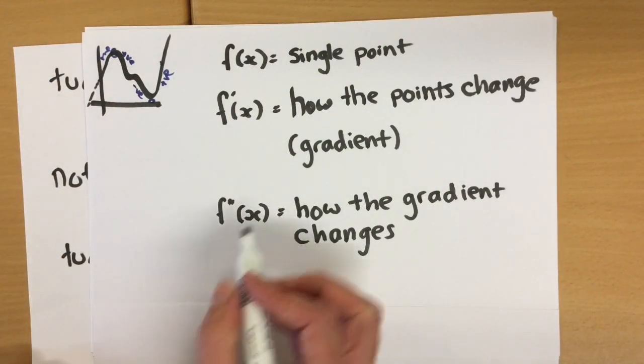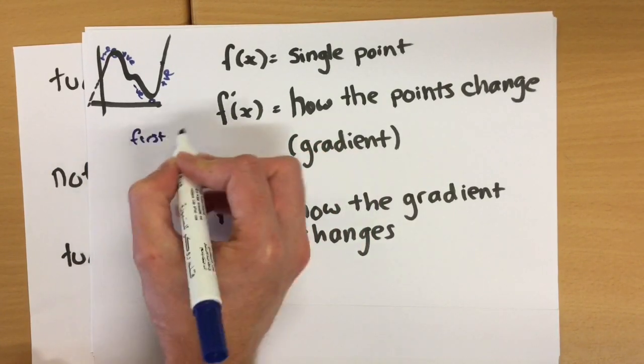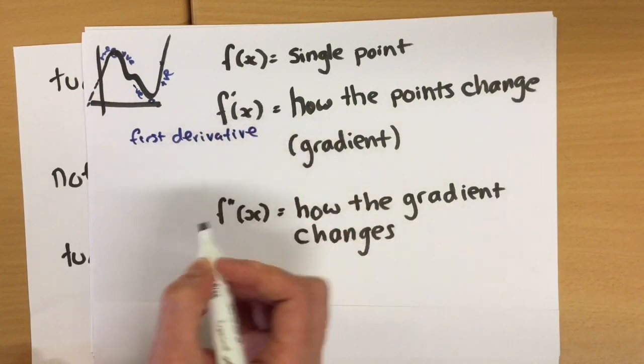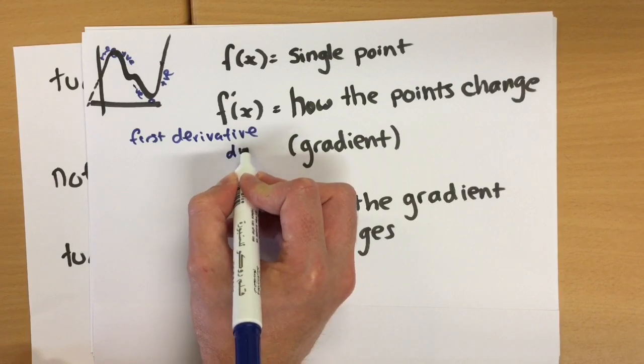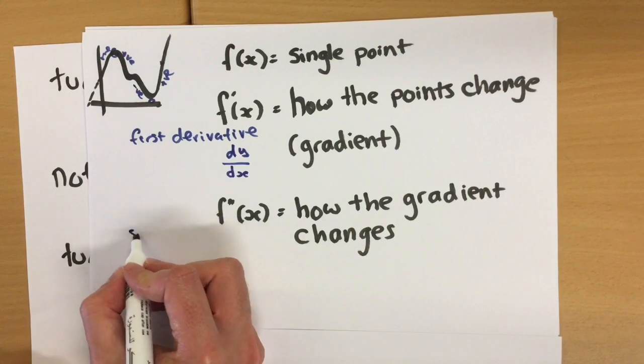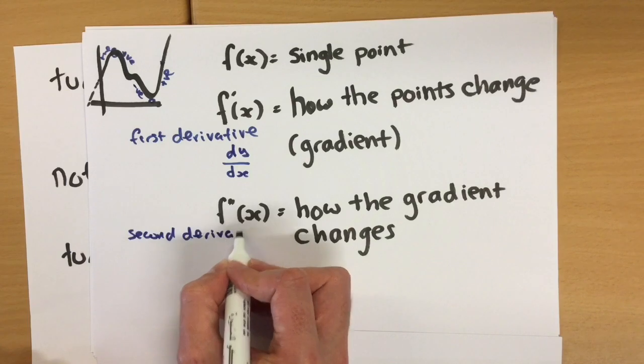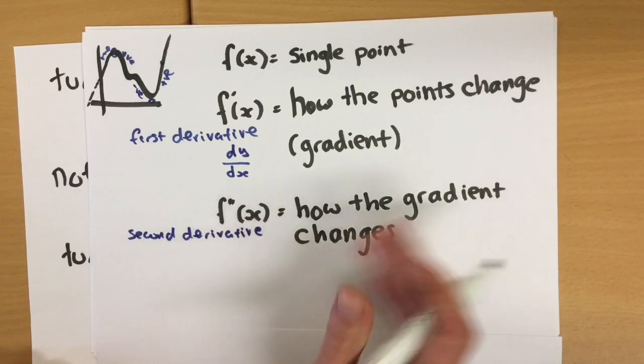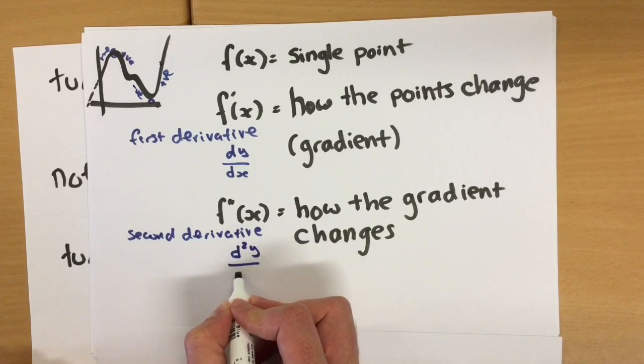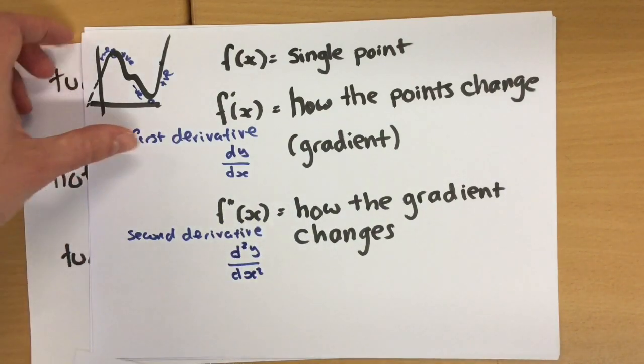Some notation for you. So obviously, this is our first derivative here. So we call the first derivative, and you also know that written like this: dy by dx. Our second derivative, which talks about how the gradient is changing, is d squared y over dx squared. It means exactly the same thing, just some different notation for you.